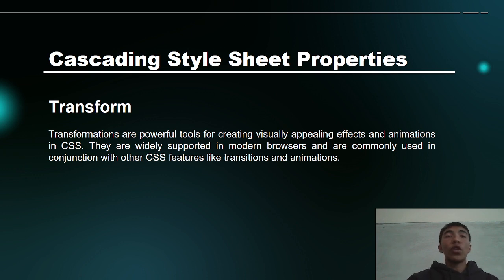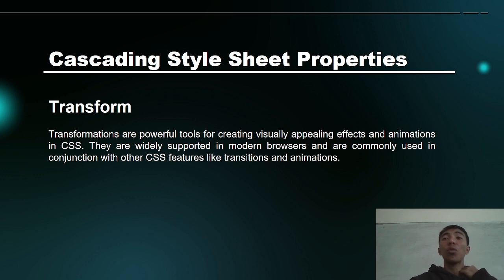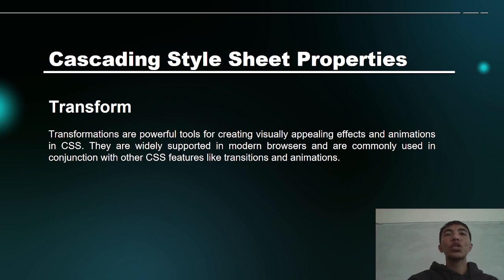Followed by transform. This is the last topic to discuss in Cascading Style Sheets. Transformations are powerful tools for creating visually appealing effects and animations. They are widely supported in modern browsers and commonly used in conjunction with other CSS features like transitions and animations. We use transform to create 2D and 3D effects or designs for our websites.